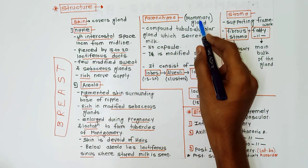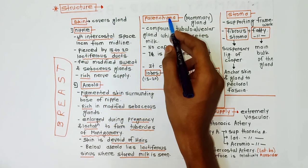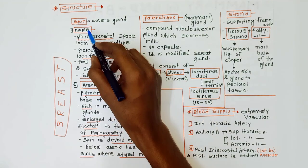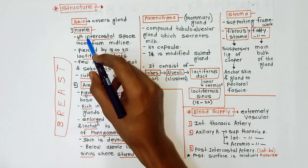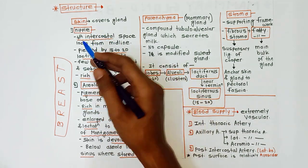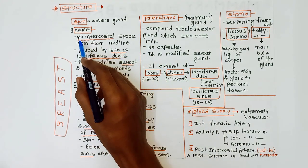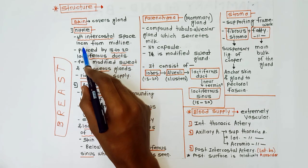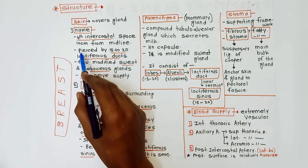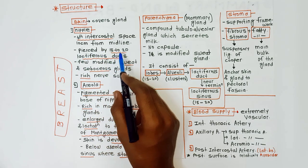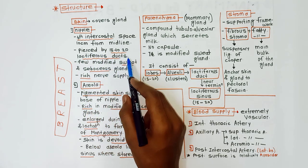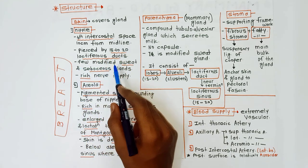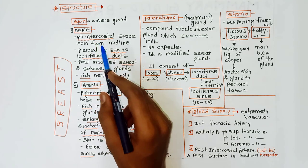For skin, the two important points to remember are nipple and areola. Regarding the nipple: it is situated in the fourth intercostal space, 10 centimeters from the midline. It is pierced by 15 to 20 lactiferous ducts, and a few modified sweat and sebaceous glands are present in the nipple.